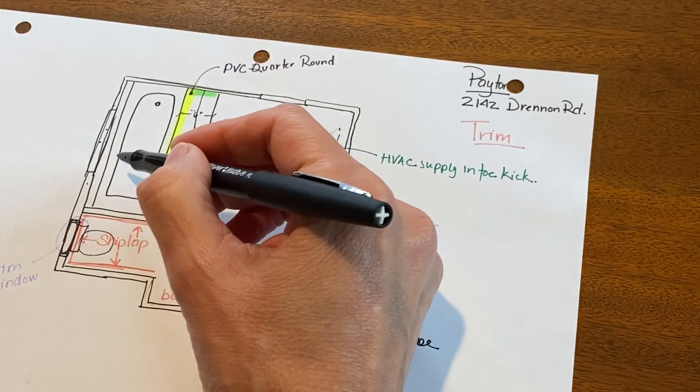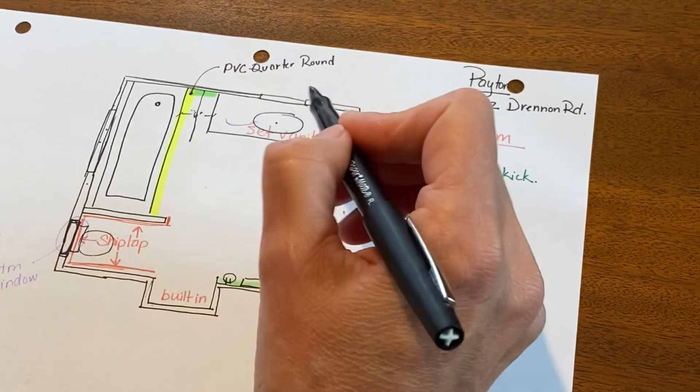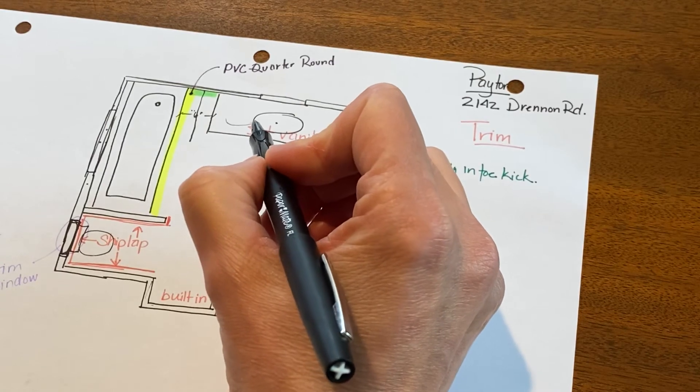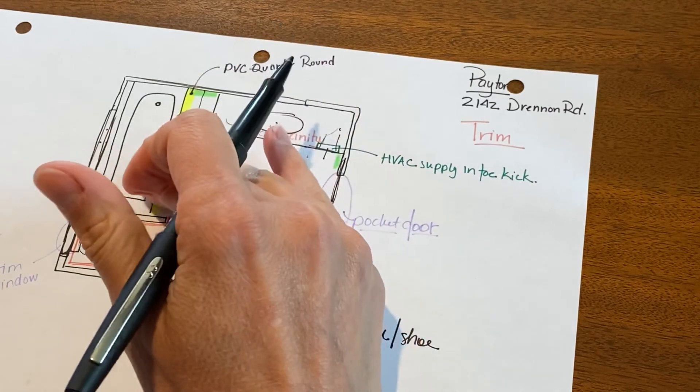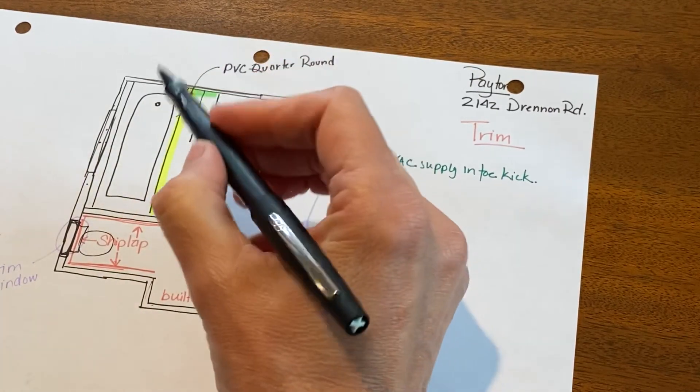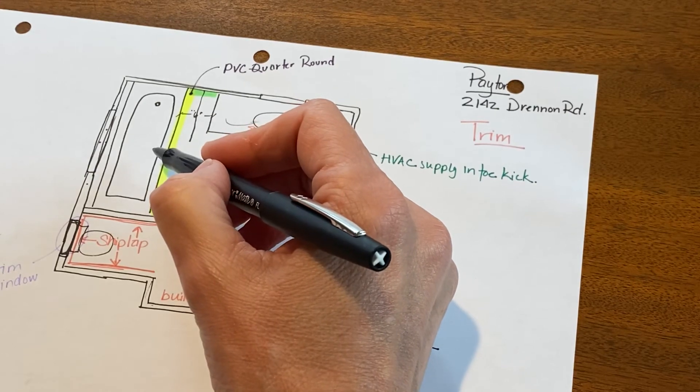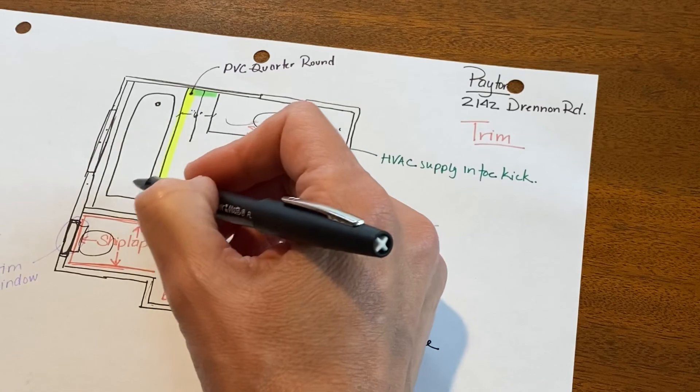But when they took the drywall off and uncovered the framing, it was only framed with two-by-fours, and that's really not good enough to put in a window like that. It could have flexed, and I just felt like the probability that it would leak in the near future was very high. So I had already bought a window, so thankfully I got it at Lowe's and they let us take it back.